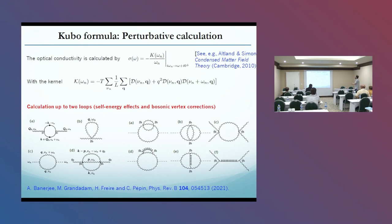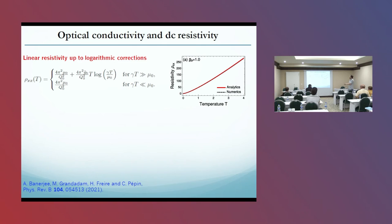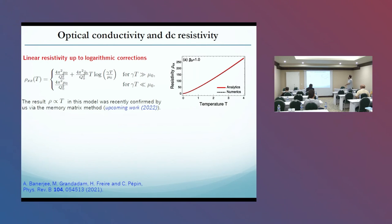We calculate everything using the Kubo formula and these are the two-loop Feynman diagrams we have to evaluate. We then get the resistivity given by this expression. This result of linear resistivity was also confirmed using a different model — the memory matrix model — which is an upcoming work.